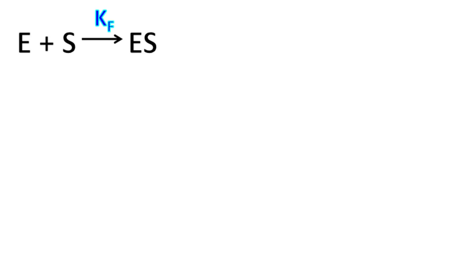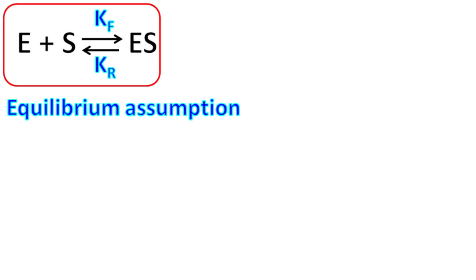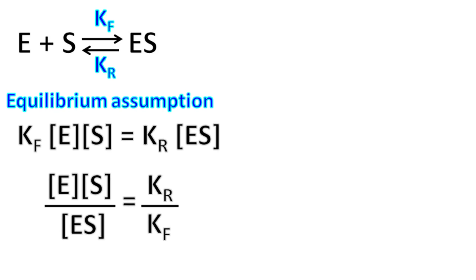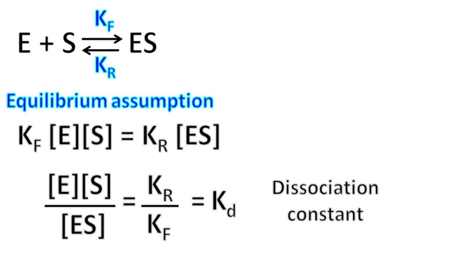The enzyme acts on the substrate and forms an enzyme-substrate complex. This is a reversible reaction under equilibrium, also known as the equilibrium assumption. According to the law of mass action, E·S·Kf = ES·Kr. If we take the ratio of Kr to Kf, we get the dissociation constant, represented by the term Kd.